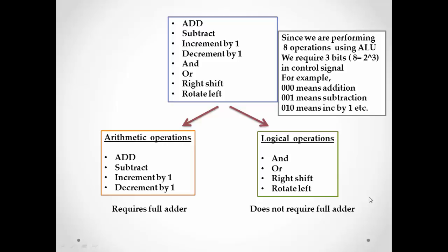Suppose we want to design an ALU that can perform eight functions: add, subtract, increment by one, decrement by one, AND, OR, right shift, and rotate right. Since we are performing eight operations, we require three bits to control which operation will be performed. For example, 000 means addition between A and B, 001 means subtraction between A and B, and so on.